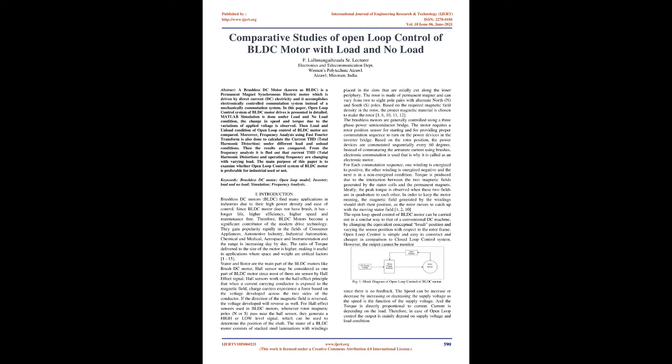Abstract. A brushless DC motor, known as BLDC, is a permanent magnet synchronous electric motor which is driven by direct current (DC) electricity, and it accomplishes an electronically controlled commutation system instead of a mechanically controlled commutation system.